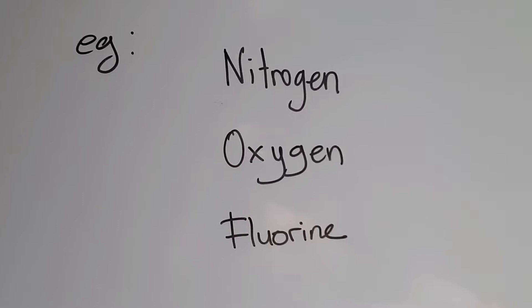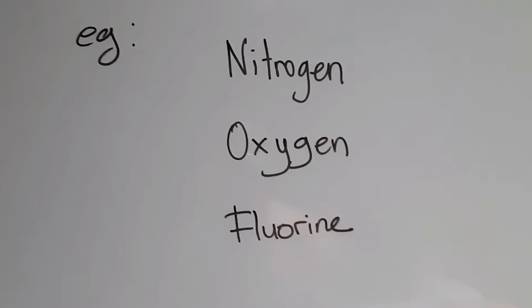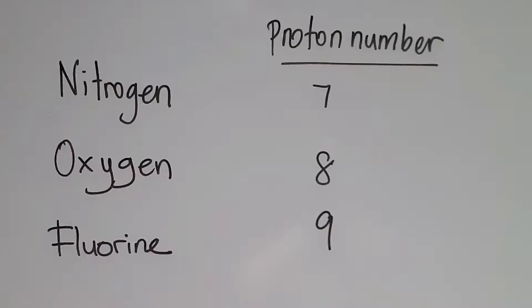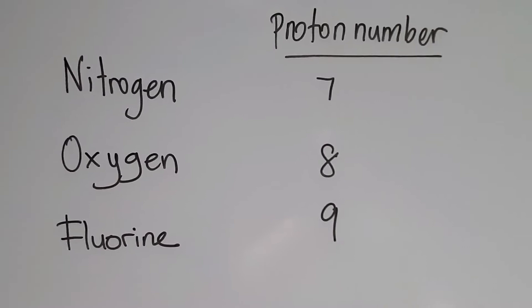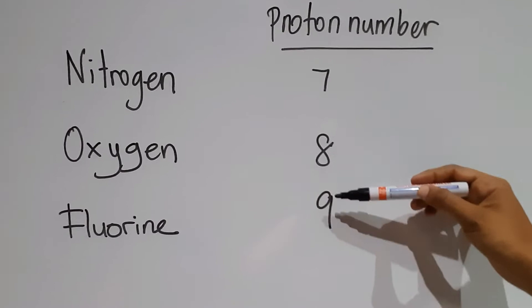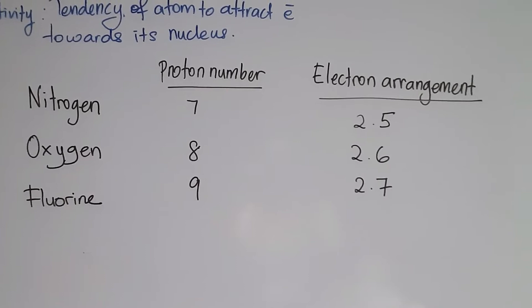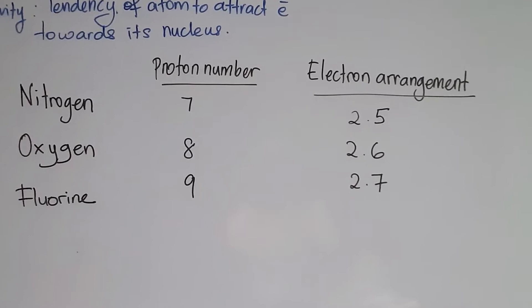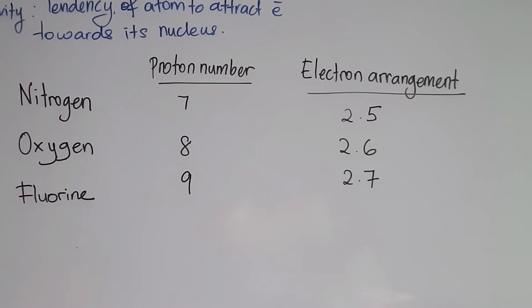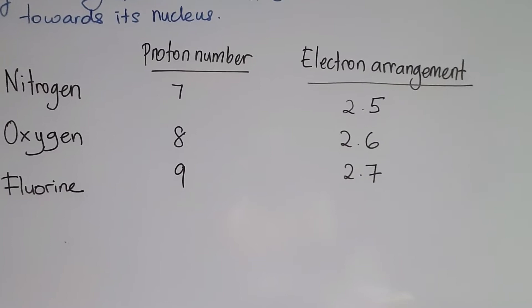The most electronegative elements in the periodic table are nitrogen, oxygen, and fluorine. The proton number of nitrogen is 7, oxygen is 8, and fluorine is 9. Based on these proton numbers, the electron arrangement for nitrogen is 2,5; for oxygen it is 2,6; and for fluorine the proton number is 9, hence the electron arrangement is 2,7.